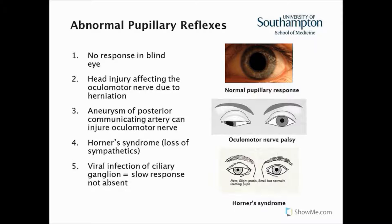Number four is Horner's syndrome. This is a lack of sympathetics to the head, and in particular going to the eye. A lack of sympathetics would leave us with a slightly constricted pupil already, but with the flashlight test we would expect there to be some level of response and further constriction with Horner's syndrome.